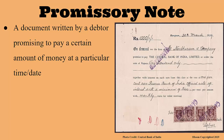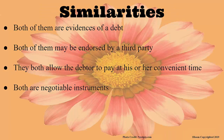Now it is the debtor who is giving the creditor a document, as opposed to what we had in bill of exchange where it was the creditor giving the debtor a document. There are actually lots of similarities as well as differences between those two. To begin, both of them are evidence that a debt exists and it needs to be cleared. Both can also be endorsed by a third party, and most importantly, they allow the debtor to pay at his or her convenient time. Finally, both are negotiable.